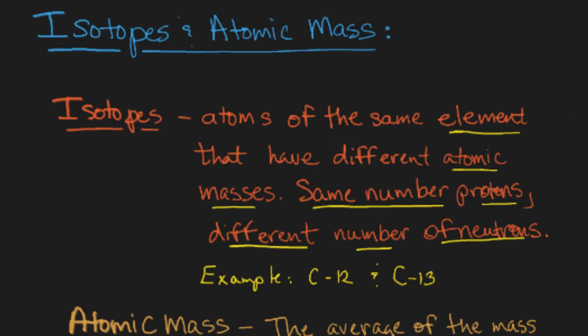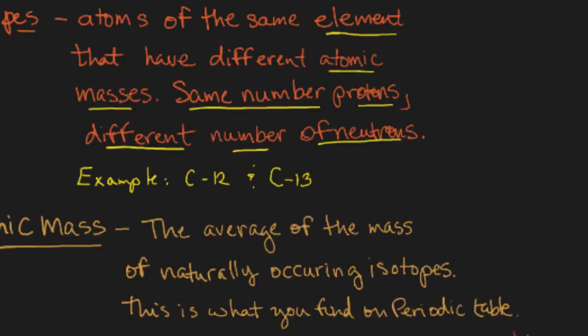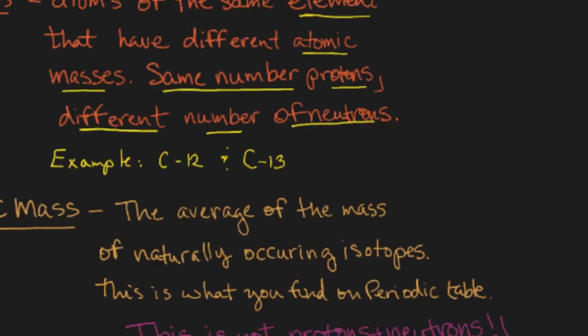We keep throwing around this word, atomic mass. What is atomic mass? It's exactly what I just said. The average of the mass of the naturally occurring isotopes. This is what you're going to find on the periodic table. It's also referred to as a molar mass.